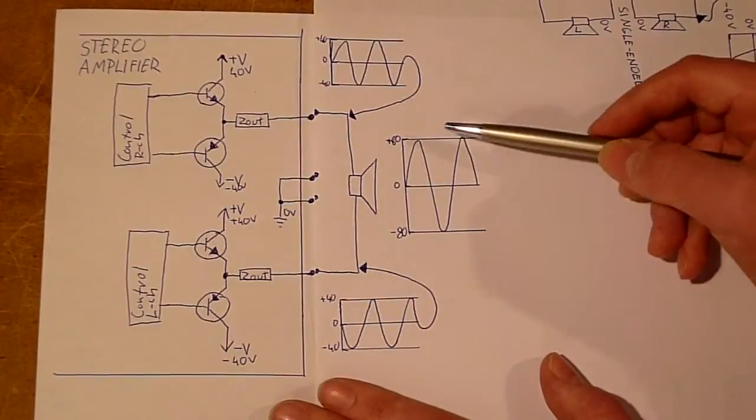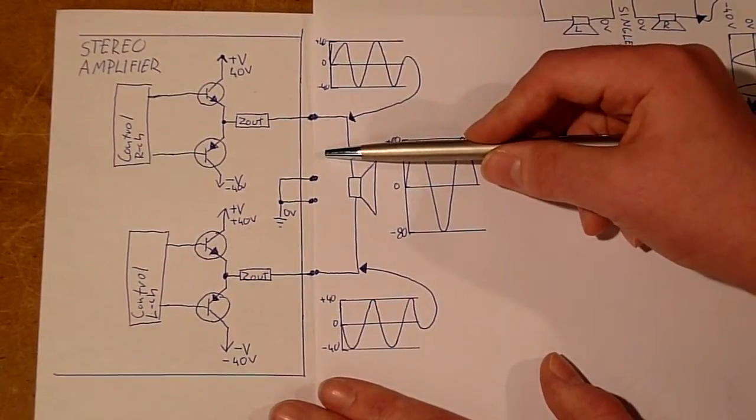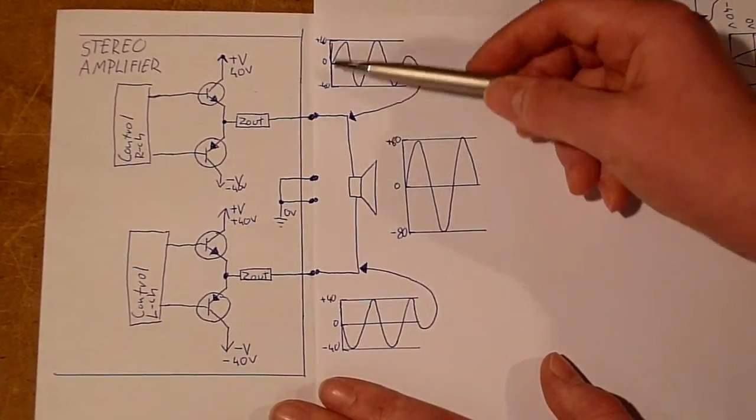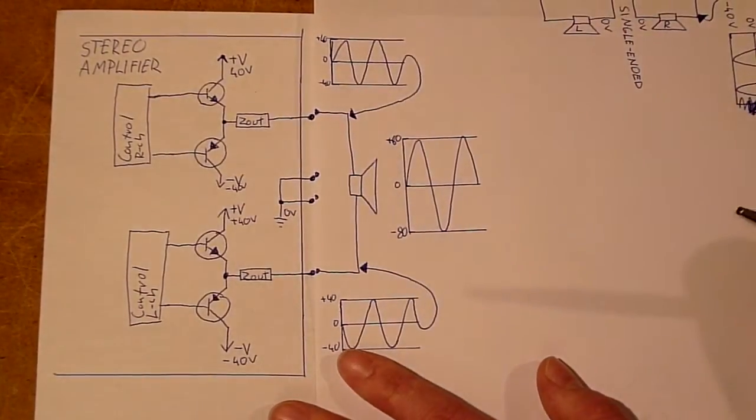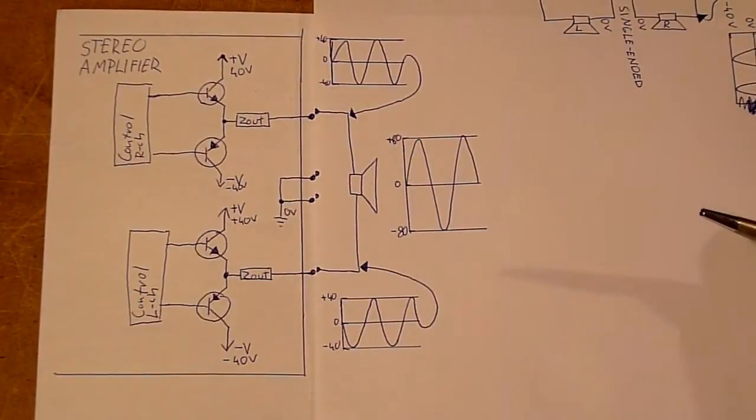So the amplifiers will be putting out a lot more current for the same voltage, because 40 volts out of this amplifier is 80 volts across the speaker. But enough talking, let's get to the experiment.